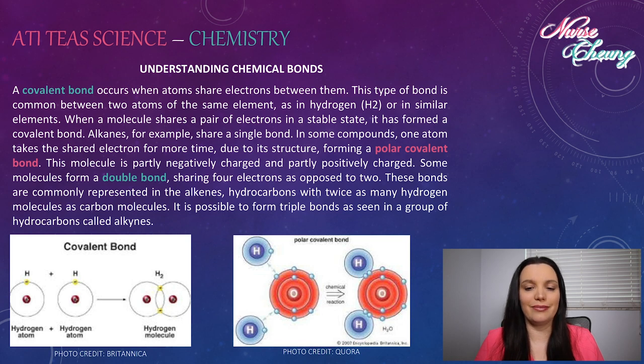Alkanes, for example, share a single bond. In some compounds, one atom takes the shared electron for more time due to its structure, forming a polar covalent bond. This molecule is partly negatively charged and partly positively charged. Some molecules form a double bond, sharing four electrons as opposed to two. These bonds are commonly represented in the alkene hydrocarbons with twice as many hydrogen molecules as carbon molecules. It is possible to form triple bonds as seen in a group of hydrocarbons such as alkynes.